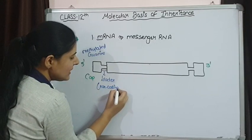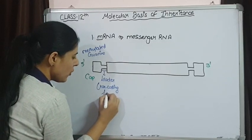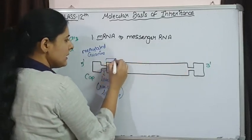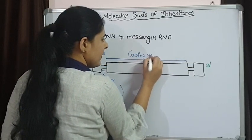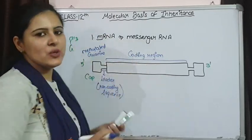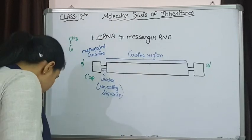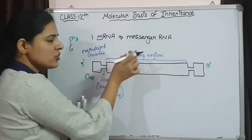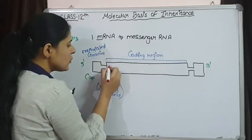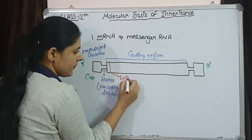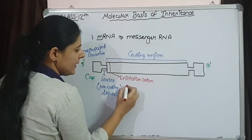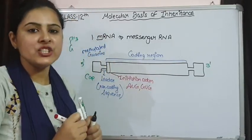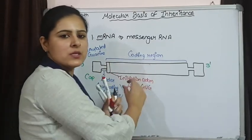It is non-coding, meaning it is not going to code for any of the amino acids. The portion that is lying behind this non-coding sequence — this long bar — is showing the coding region, meaning this region is actually having the information to code for a protein. This is the whole sequence that is going to code for amino acids. The starting portion of this coding region always has an initiation codon — it can be AUG or GUG — these are initiation codons that are going to start the process of protein synthesis.